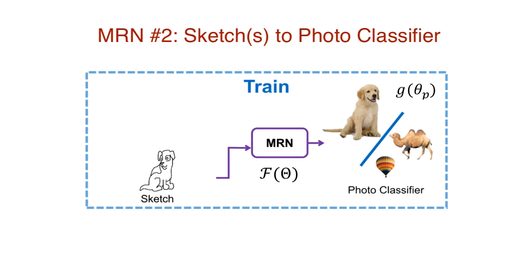Now, instead of an entire sketch classifier, what if the input of the MRN is just a sketch, or a few sketches? Let's represent the sketch by sigma, parameterized by the feature extractor phi. We feed k such sketches to train the MRN in order to generate a photo classifier.